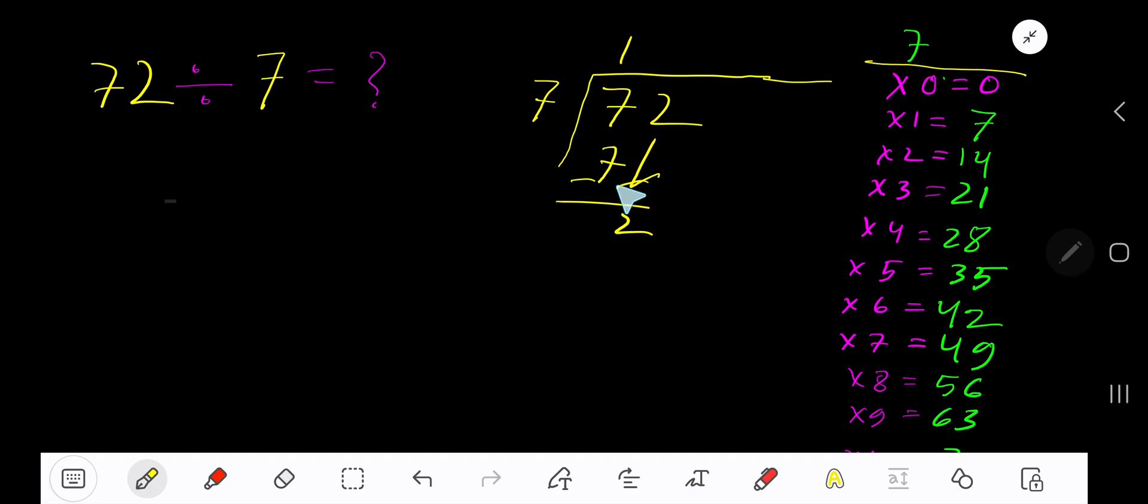7 goes into 02 how many times? 0 times, as 2 is less than 7. 0 times 7 is 0. Subtract to get 2. So our answer is 10 remainder 2.